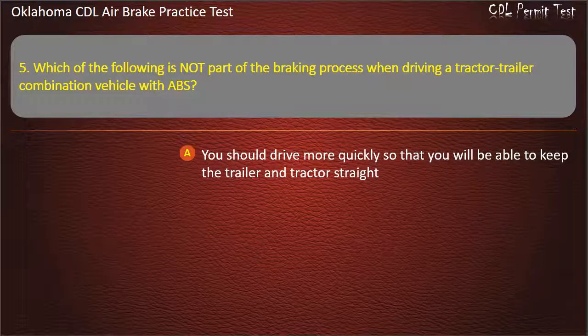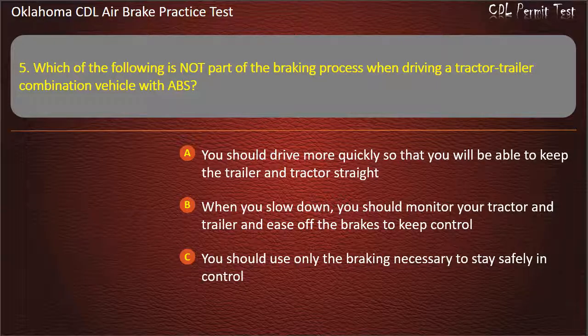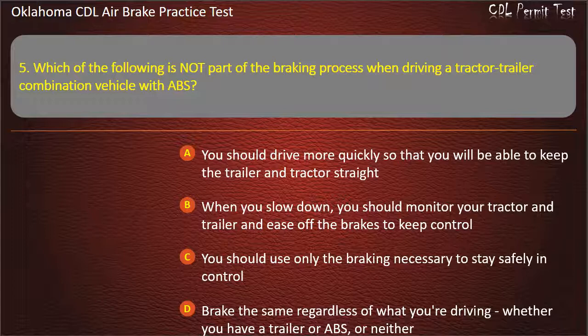Question 5 (answer choices): You should drive more quickly so that you will be able to keep the trailer and tractor straight; when you slow down, you should monitor your tractor and trailer and ease off the brakes to keep control; you should use only the braking necessary to stay safely in control; or brake the same regardless of what you're driving, whether you have a chiller or ABS, or neither. Answer: You should drive more quickly so that you will be able to keep the trailer and tractor straight.